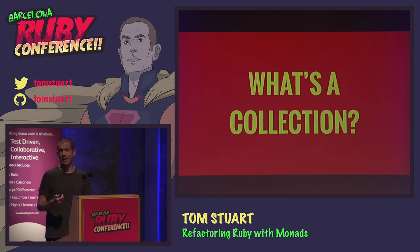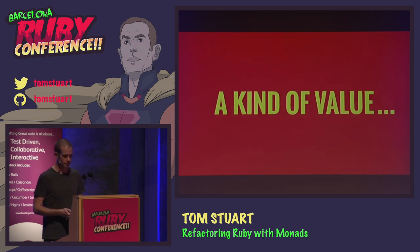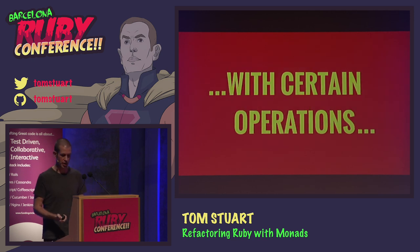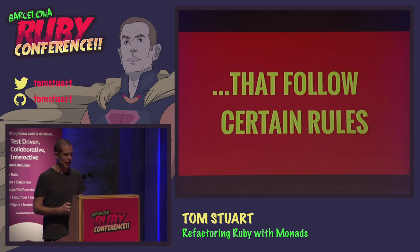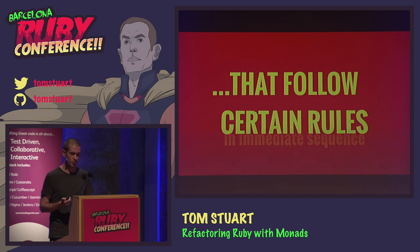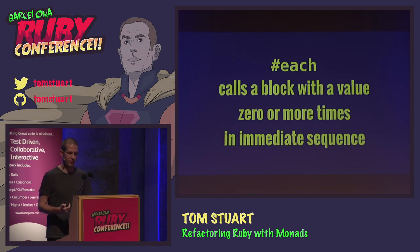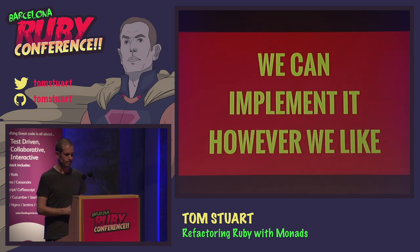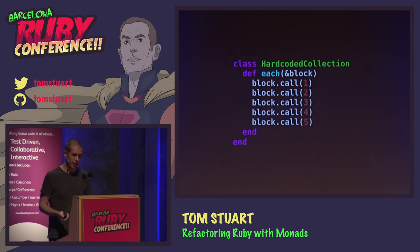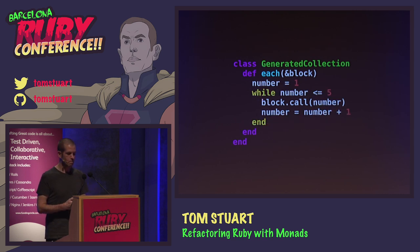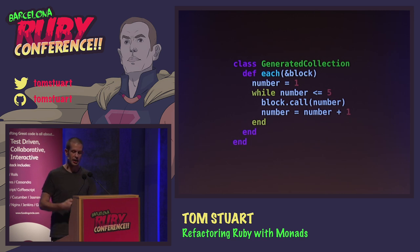Here's another question: what's a collection — or at least in Ruby, what's a collection? Well, it's a kind of value with certain operations — actually just one operation in Ruby called each. And that operation follows one rule: each calls a block with a value zero or more times in immediate sequence. We can implement that operation however we like. Here's a hard-coded collection whose each method literally calls a block with one through five, and here's a generated collection whose each method calculates those values dynamically.